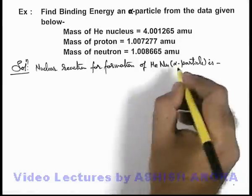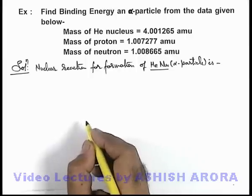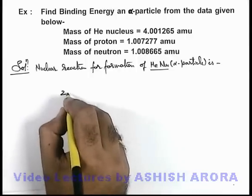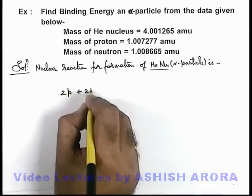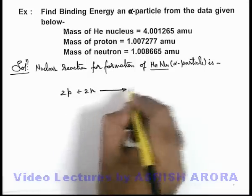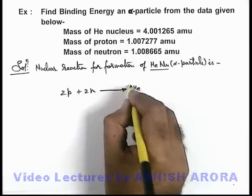We know that in a helium nucleus there are 2 protons and 2 neutrons, so we can write 2 protons plus 2 neutrons give the helium nucleus, which is 2He4.